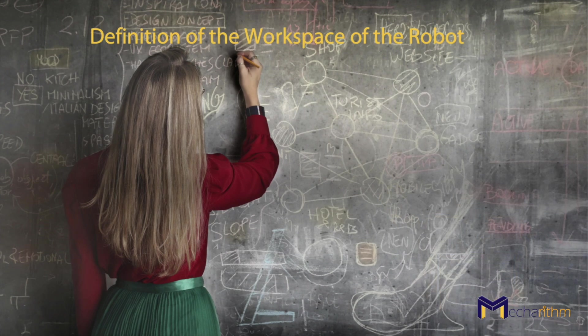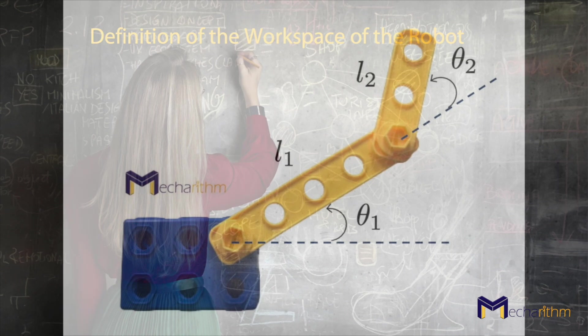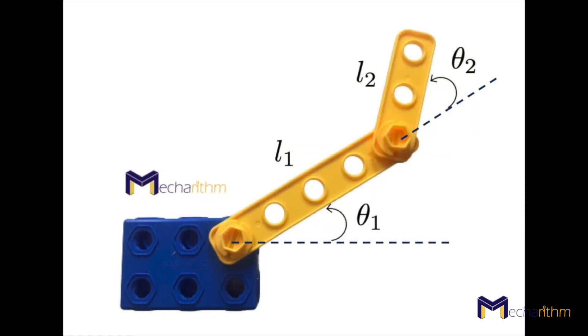On the other hand, the workspace of a robot is a specification of the reachable configurations of the end effector. The workspace of a robot has nothing to do with a particular task. Now let's see this with an example.